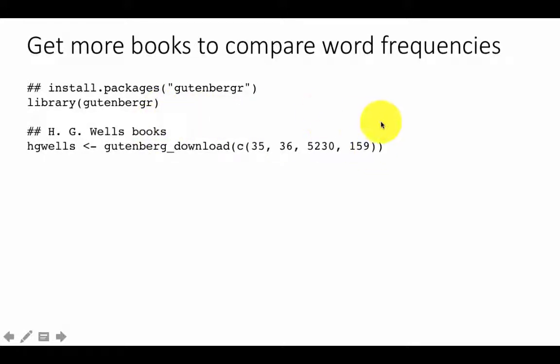So for example, suppose we want to download the full text of all the books by H.G. Wells. One of the famous books that H.G. Wells wrote was Time Machine. Another was 1984. So a lot of good books that H.G. Wells has written. So you can do, for example, hgwells is gutenberg_download C(35, 36, 5230, 159). Now these are the identification numbers of some of H.G. Wells' books. Now, how did we find these identification numbers? Well, if you go to the Gutenberg Project's website or if you go to the gutenbergr project, just Google it and then once you go there, you'll be able to poke around and find the ID numbers of books by certain famous authors. So that is how we found the numbers of these particular books.